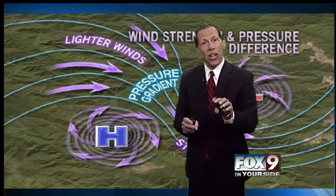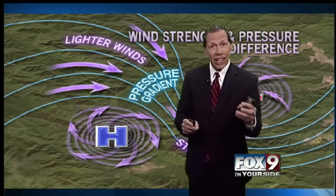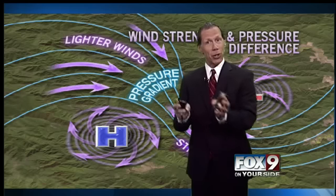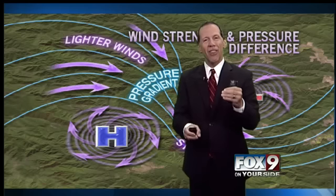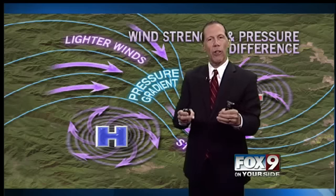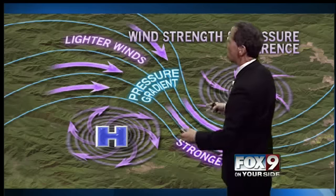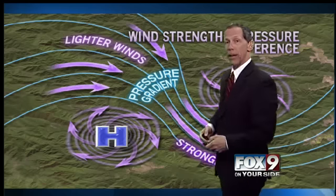And as the sun unevenly heats the earth — some places more, some places less — that affects where the high pressures and low pressures are. And basically that's how we're getting wind forming.